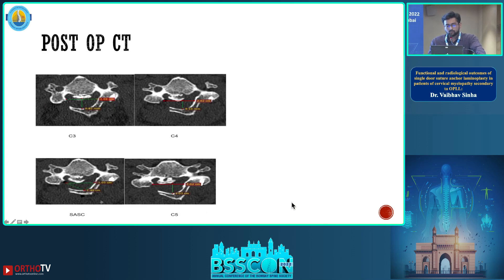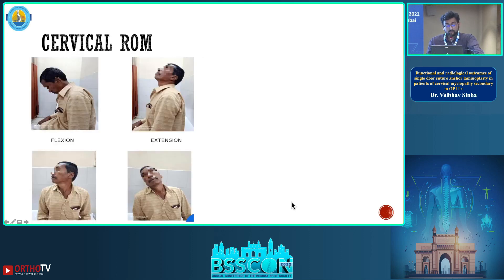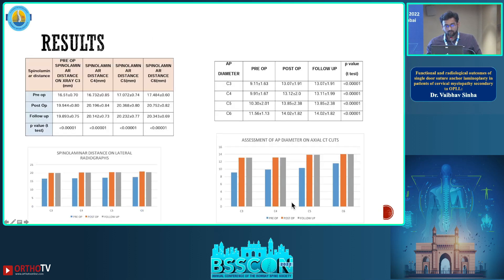Post-operative CT shows an increase in the anteroposterior diameter maintained at every level, along with an increase in area for the cord to fall back. On post-operative MRI, because laminoplasty is a non-fusion procedure, the cervical range of motion was maintained as compared to patients with fusion procedures.